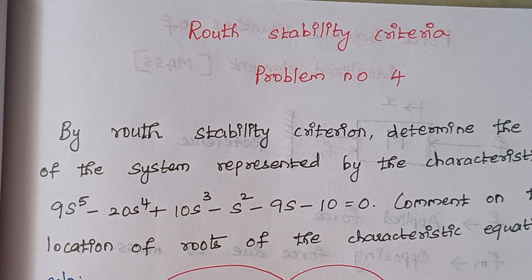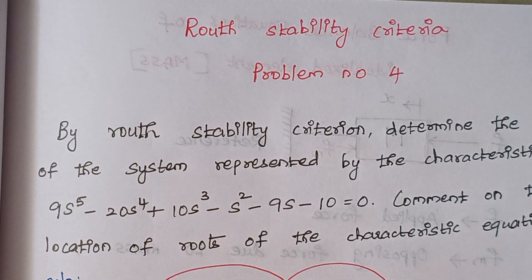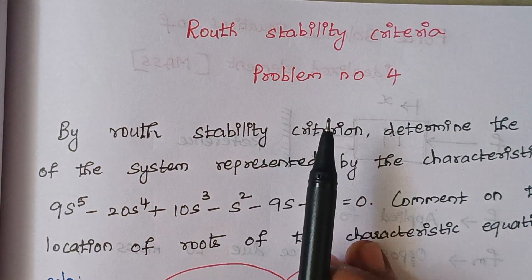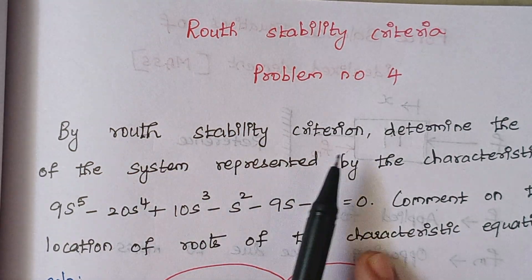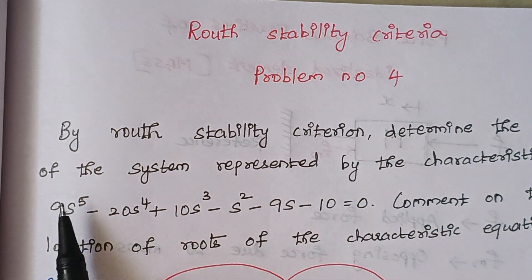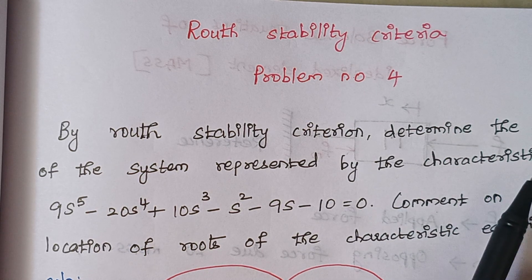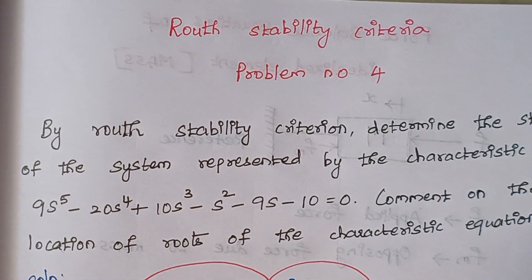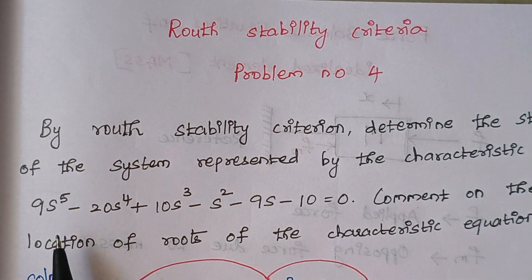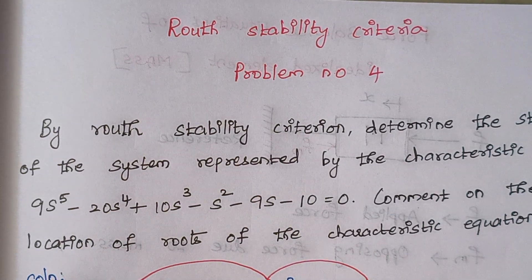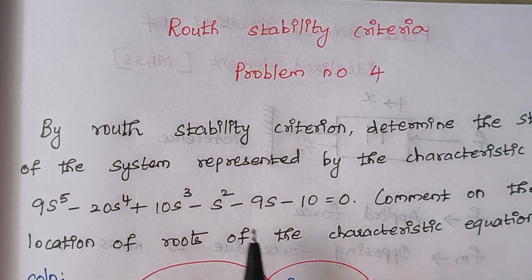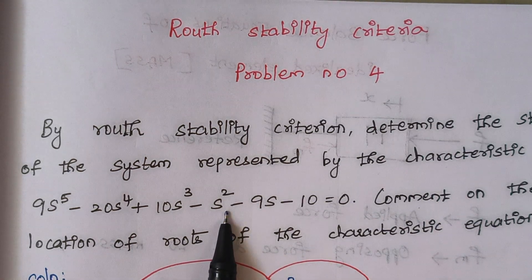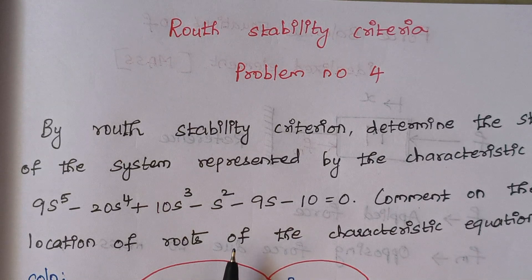Hello viewers, I am Kousalya. Today we are going to solve problem number 4 under the category Routh stability criteria. The problem is: by Routh stability criterion, determine the stability of the system represented by the characteristic equation. We have to comment on the location of the roots — first whether the system is stable or not, and second, the location of roots in the S-plane.